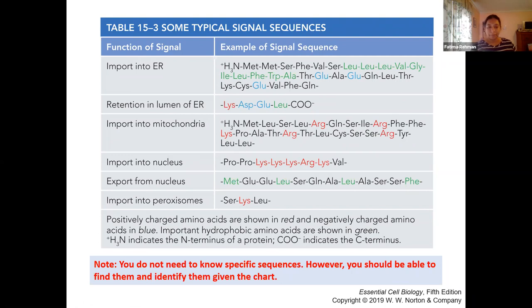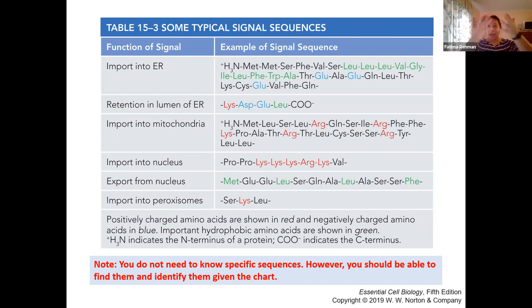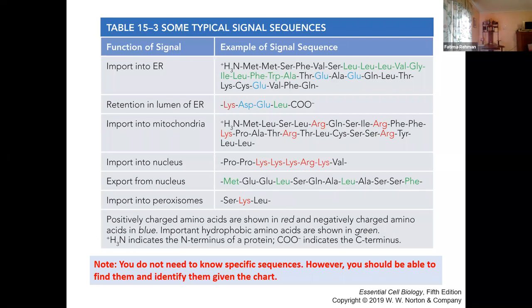Some of these signals don't have the carboxy or the amino terminal listed because they are already going to be in that final 3D tertiary structure. Their signals may not be at the beginning or the end. These sequences could be present anywhere — they don't have to be at the beginning or end because these would already be in their tertiary form and may not have the ends hanging out outside.